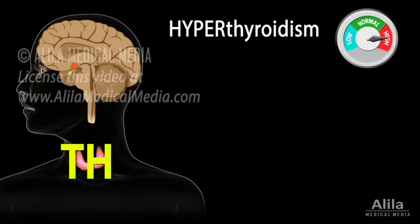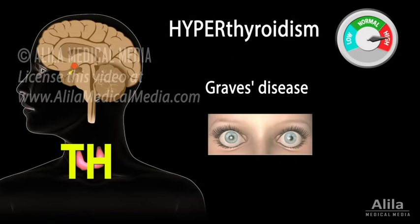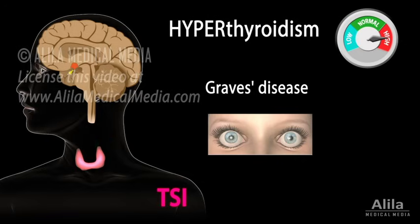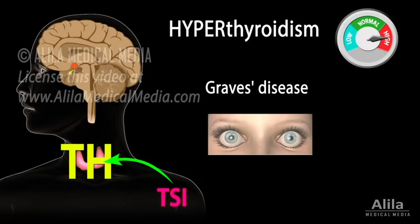Hyperthyroidism is most commonly caused by Graves' disease, another autoimmune disorder characterized by the presence of an antibody called thyroid-stimulating immunoglobulin, TSI. TSI, similar to TSH, stimulates the thyroid gland to produce hormones. Unlike TSH, however, TSI is not regulated by negative feedback mechanisms, leading to uncontrolled production of thyroid hormones. TSI also stimulates the thyroid gland to grow, which may lead to formation of a goiter.